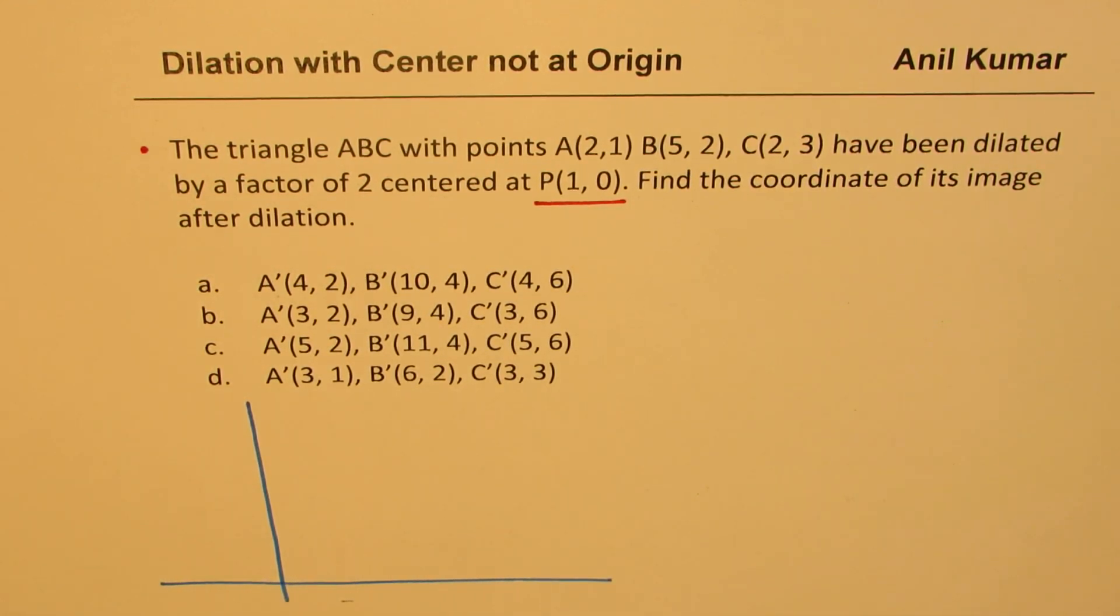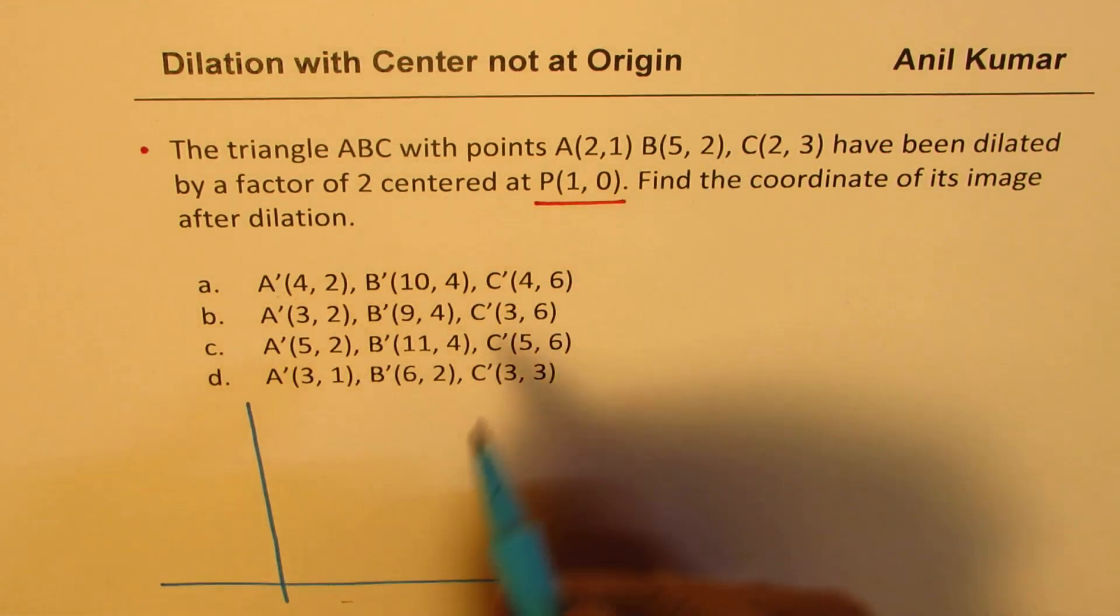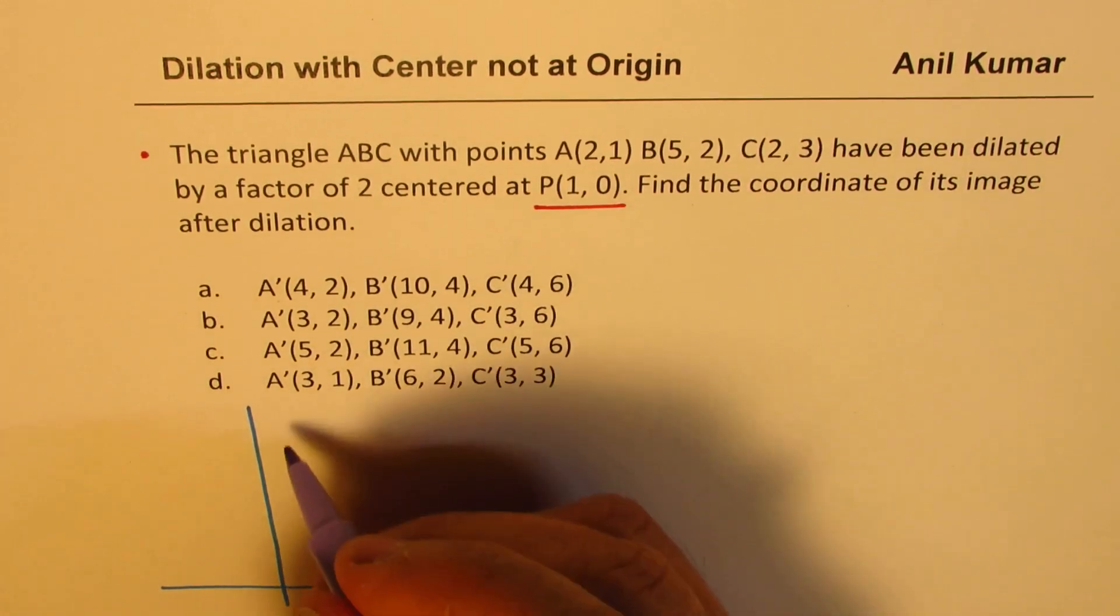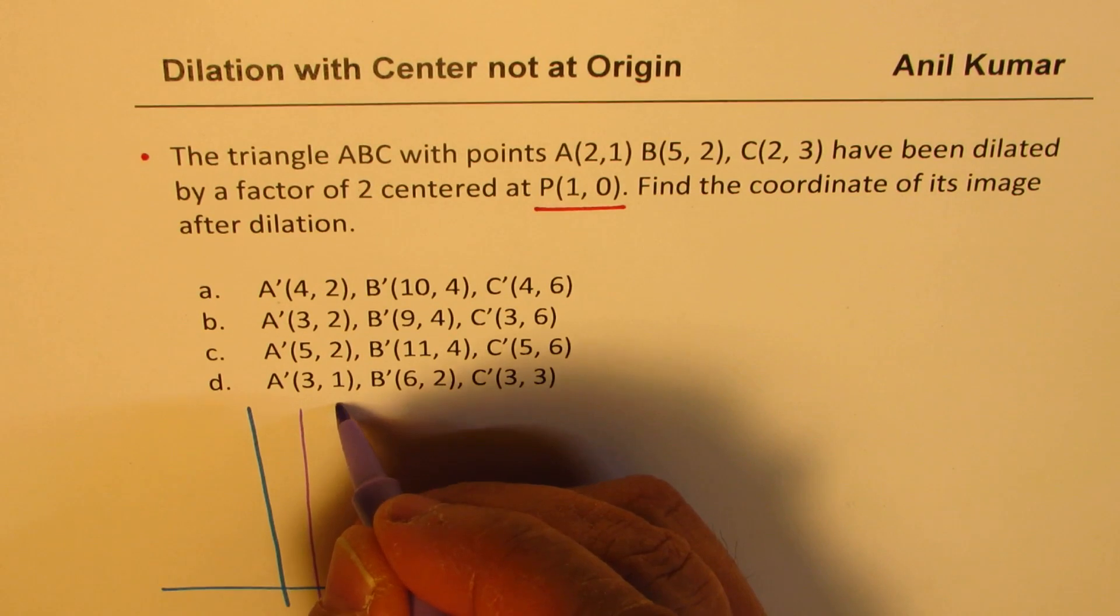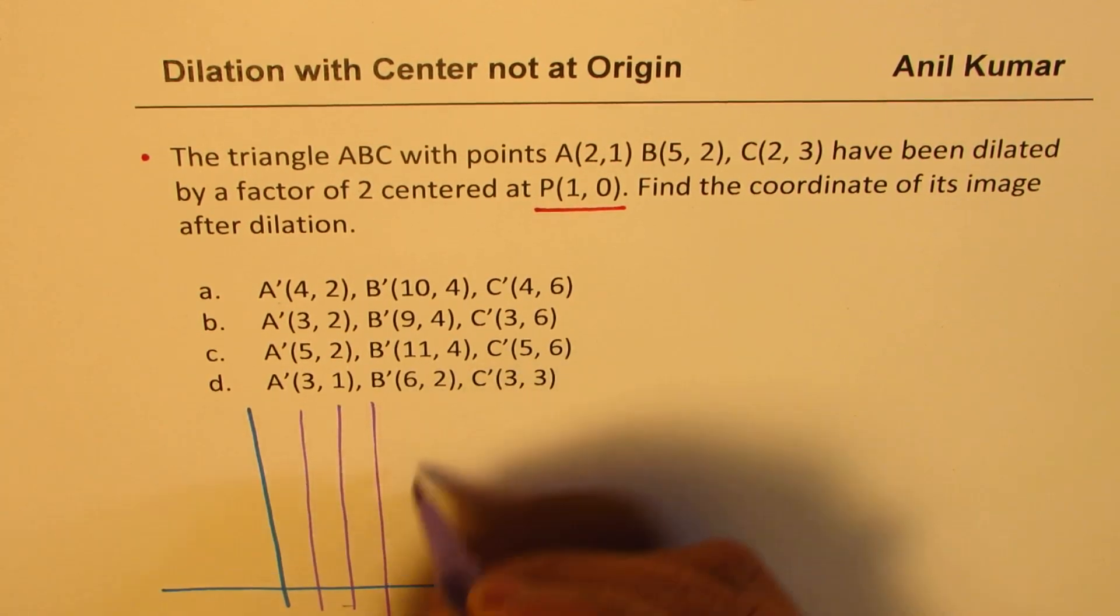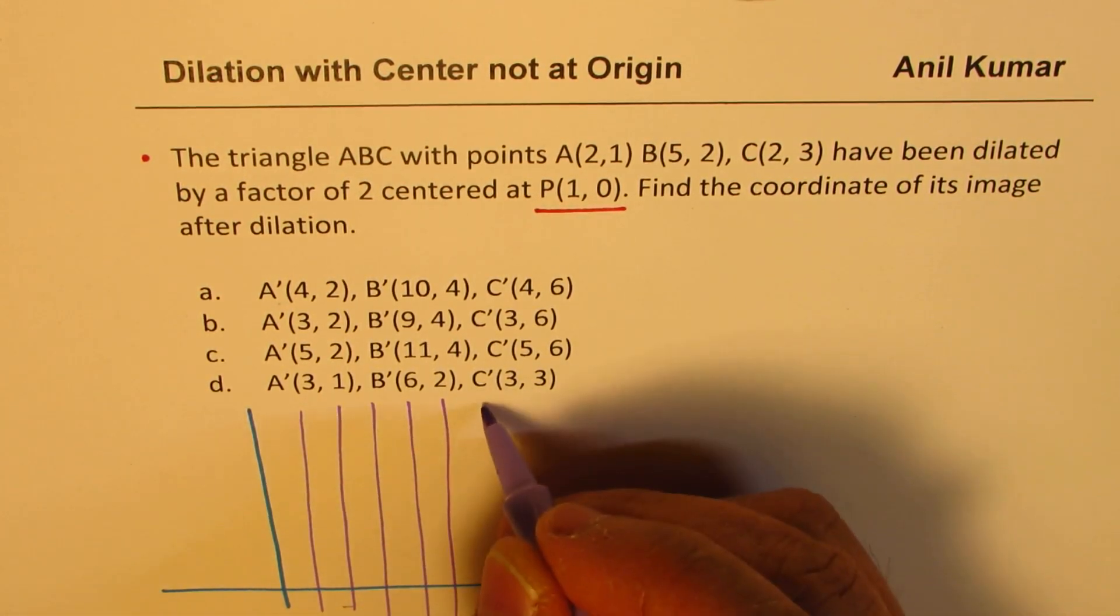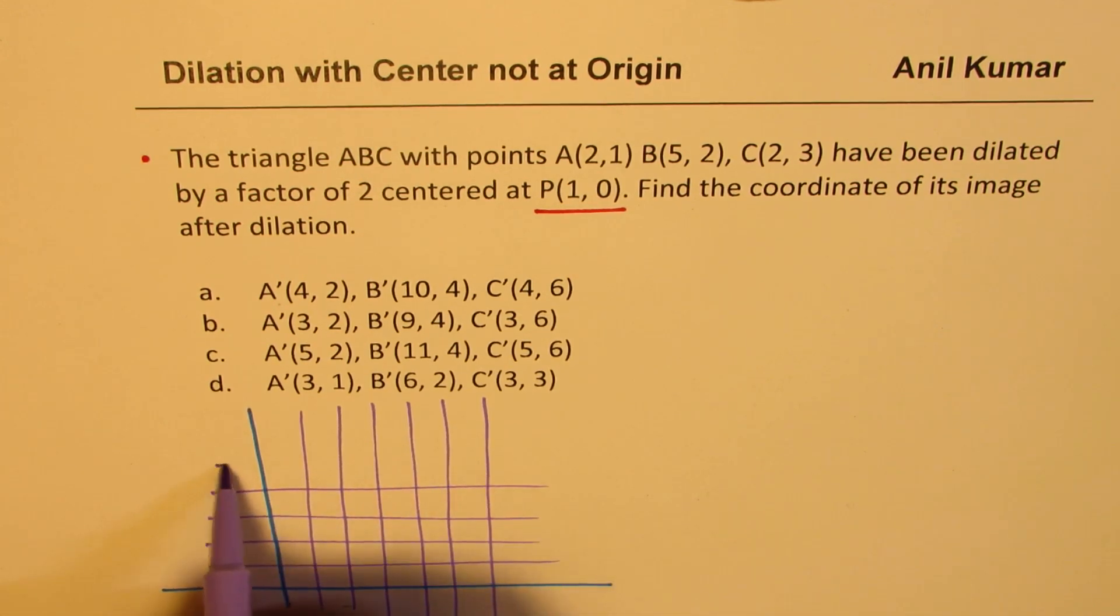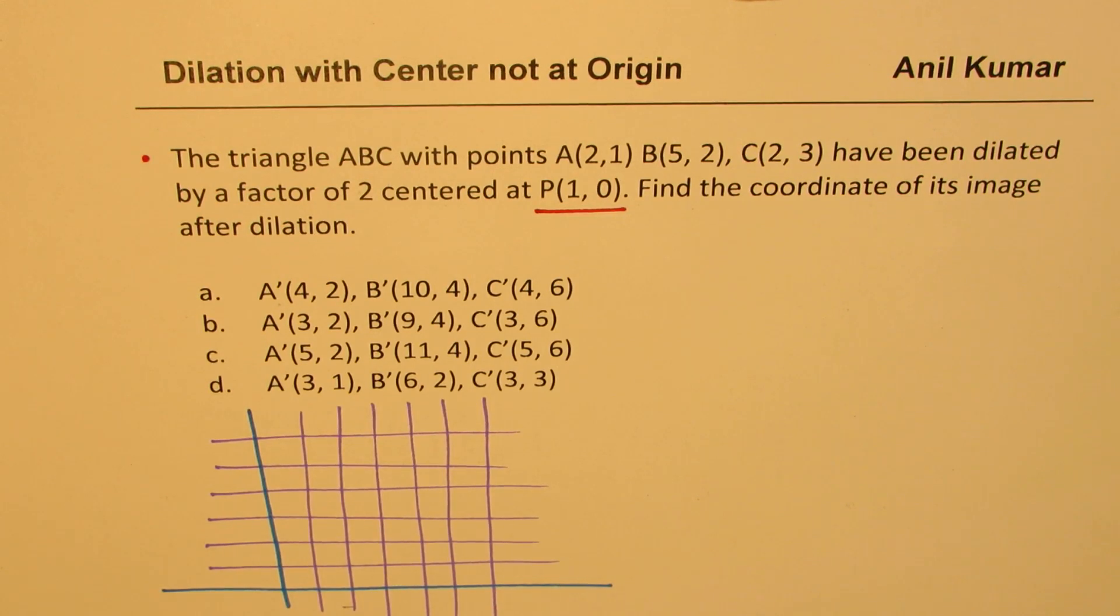So what we are given basically is point (2,1). Let me sketch it, these points, and then we'll try to understand. So let's say that is your, okay let me just plot a few points and then we'll work on it. I'm not going to get points from this rough graph but I'm going to explain you the concept from this particular graph.